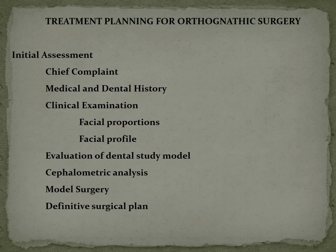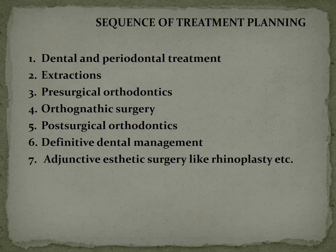For treatment planning in orthognathic surgery, the initial assessment includes recording the chief complaint, medical and dental history, and clinical examination checking facial proportions and profile. An impression is made and a dental study model is evaluated. Cephalometric analysis is performed to assess retrognathism, prognathism, or vertical maxillary excess. A mock or model surgery is performed on the study model, followed by a definitive surgical plan.